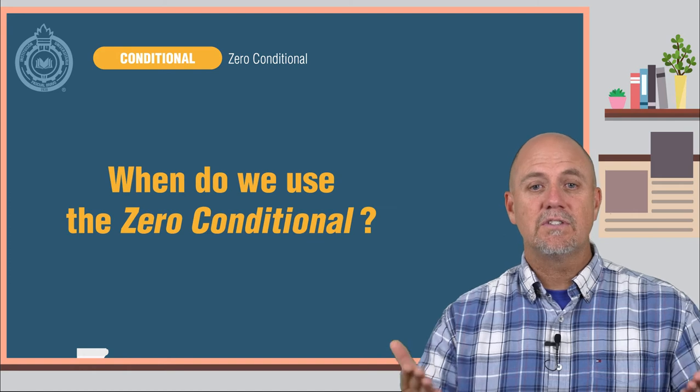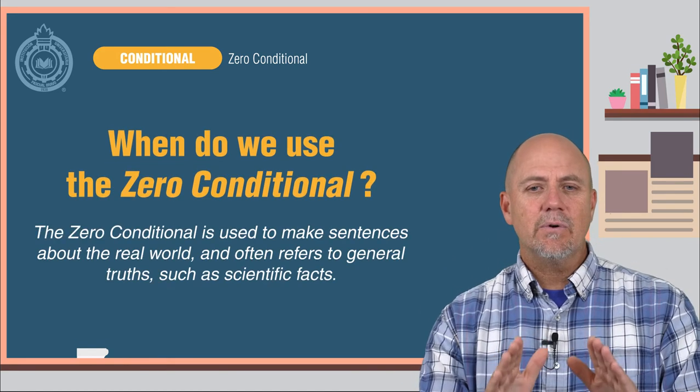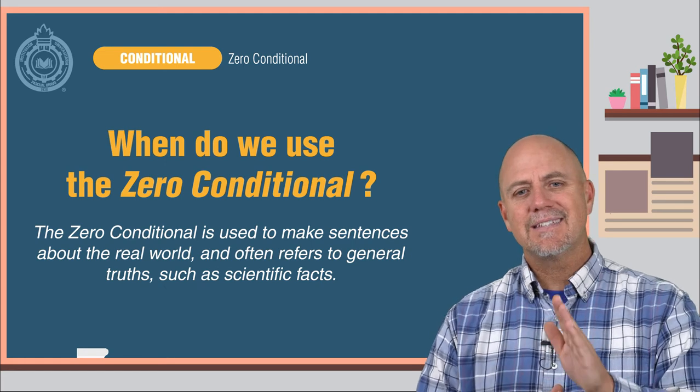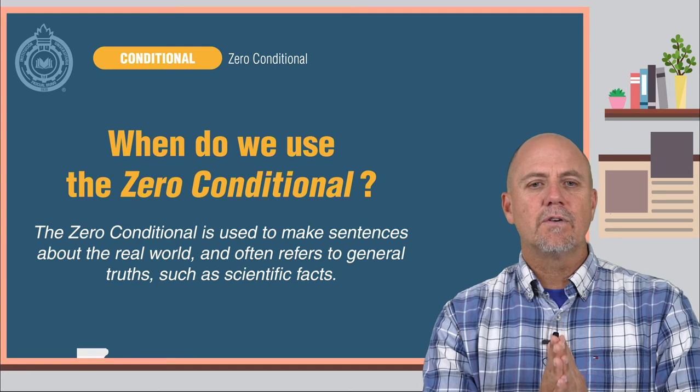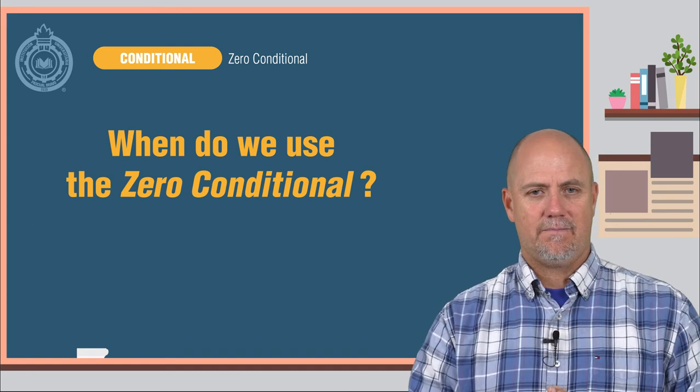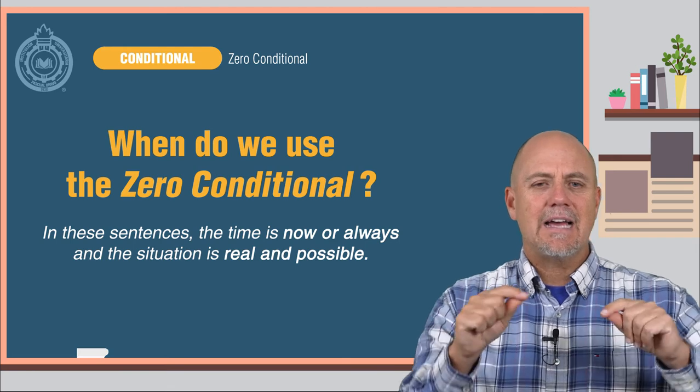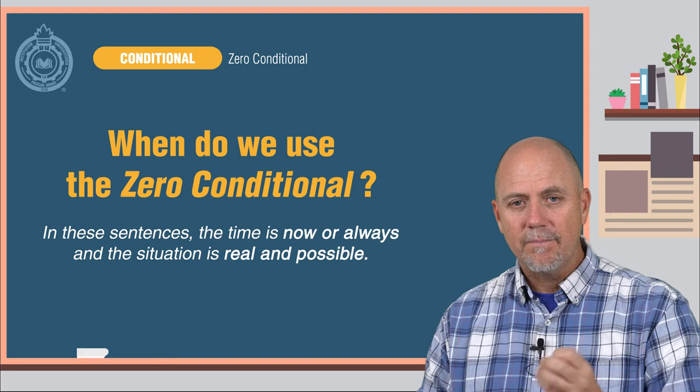When do we use the zero conditional? What is its function? The zero conditional is used to make sentences about the real world and often refers to general truths such as scientific facts. In these sentences, the time is now or always, and the situation is real and possible.